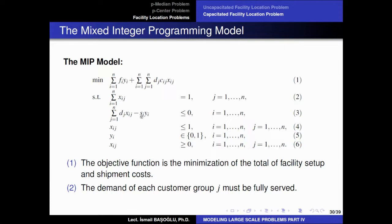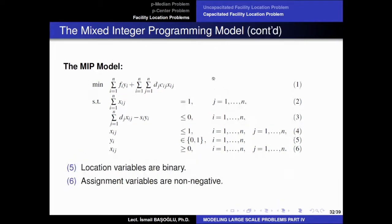If there is no facility at location I, SI is multiplied by zero, forcing all Xij values to zero. Xij values are continuous variables — less than or equal to one and greater than or equal to zero — and Yi values are binary. This gives us a mixed integer programming model for the capacitated facility location problem.